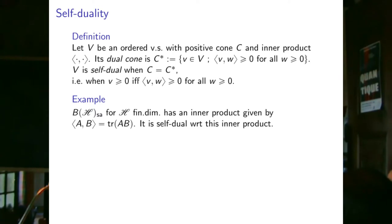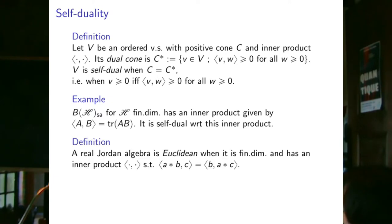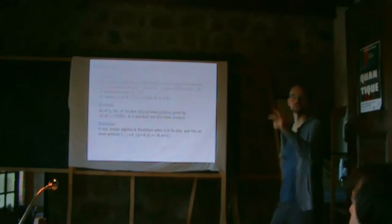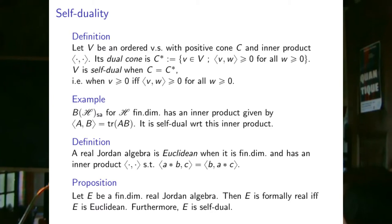Example: operators on a finite-dimensional Hilbert space, with inner product given by the trace of the product of two operators, are self-dual with respect to this inner product. For Jordan algebras, we say a real Jordan algebra is Euclidean if it is finite-dimensional and has an inner product such that the Jordan product operator is symmetric with respect to it. Importantly, for finite-dimensional real Jordan algebras, being formally real is equivalent to being Euclidean, and Euclidean Jordan algebras are self-dual.